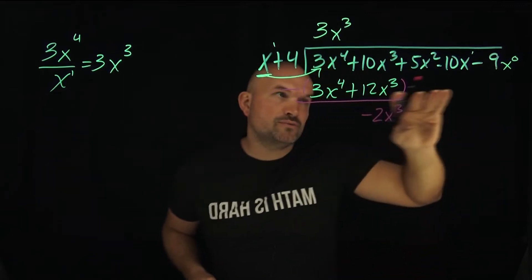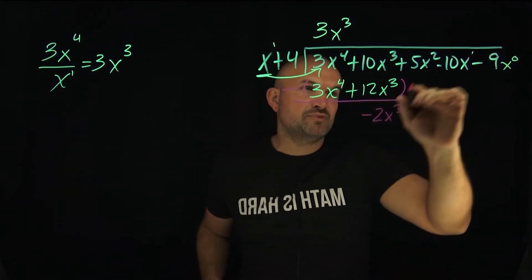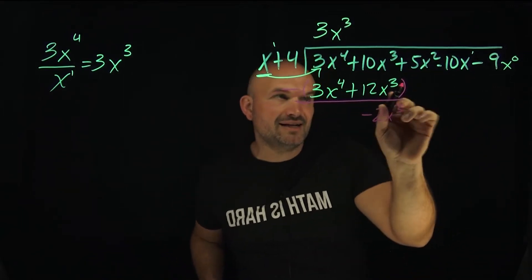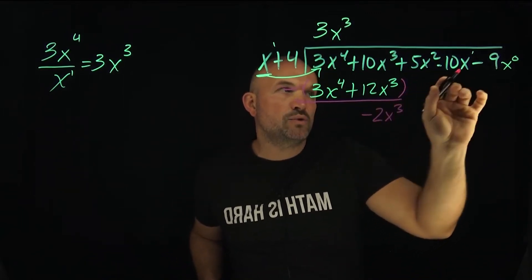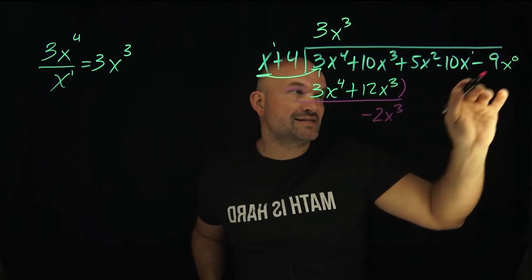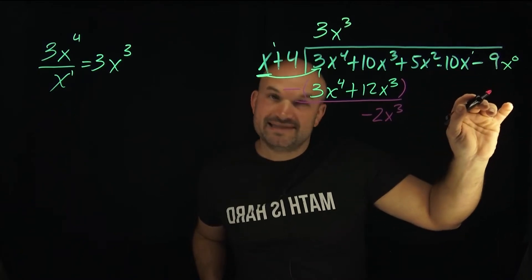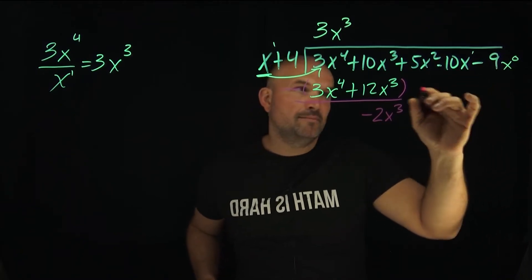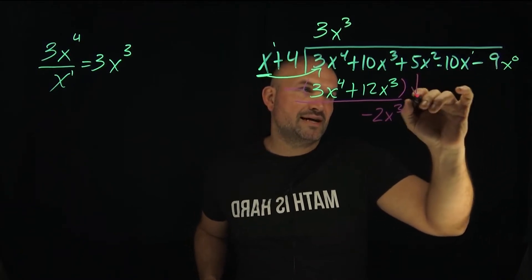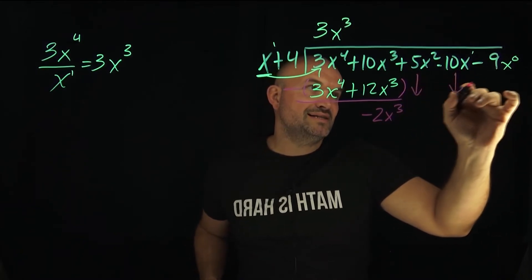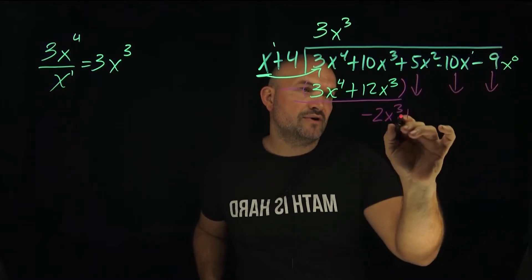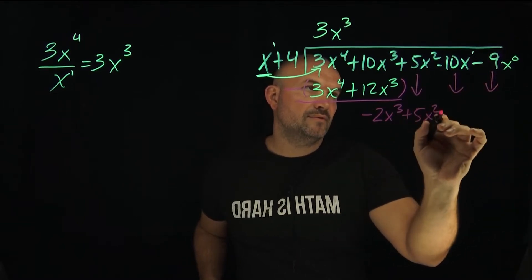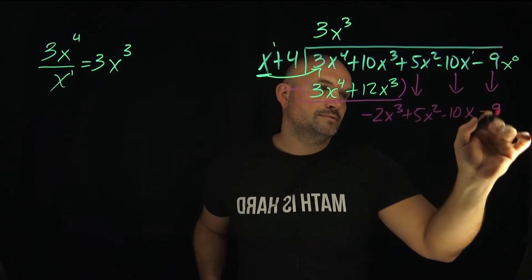For the rest of the terms, we can just bring them down to the next row. You could technically note there's a 0x squared, a 0x, and a 0 constant, but we just bring those down.